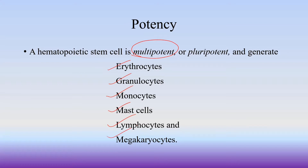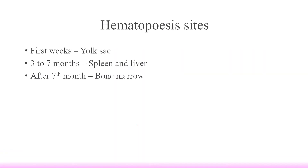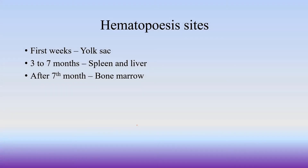The hematopoietic stem cell location changes during development. In the first week of gestation, they are in the yolk sac. In the third month, they move to the spleen and liver. By the seventh month, the hematopoietic stem cells are found in the bone marrow.